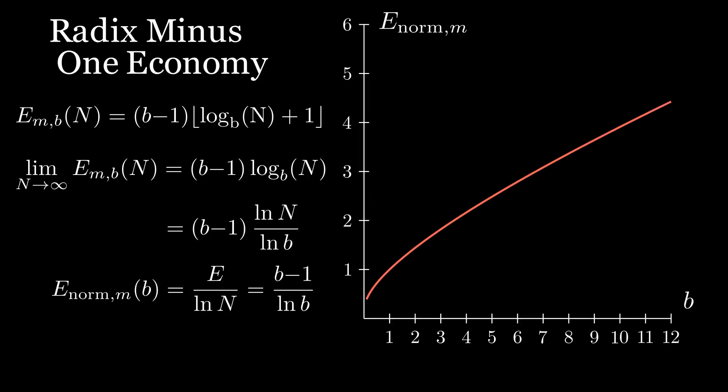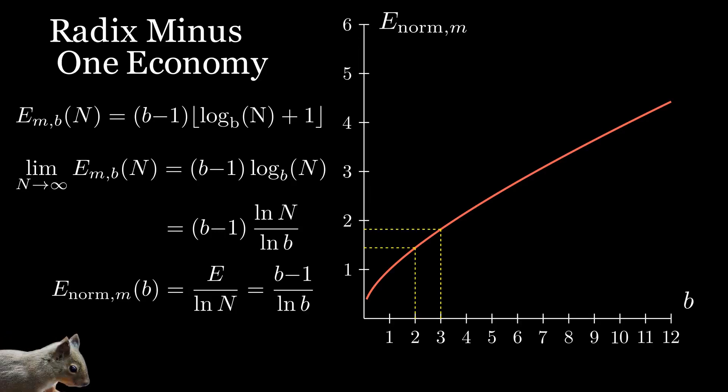If we calculate this new figure for each base, where ternary was the most efficient before, binary now wins by a significant margin.